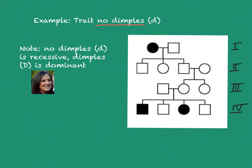We know that no dimples is the recessive allele, lowercase d, and dimples is the dominant allele, uppercase D. We know that any individual who shows no dimples, which are these three individuals in the pedigree, have to have two recessive alleles; otherwise they would have dimples. Always start with what you know. We know they have to have two recessive alleles in order to have no dimples.